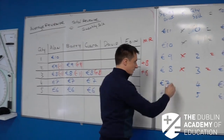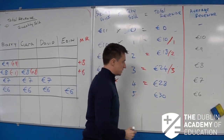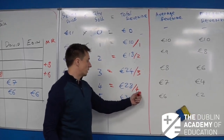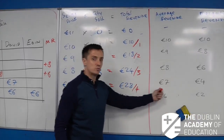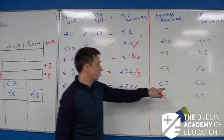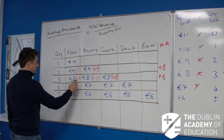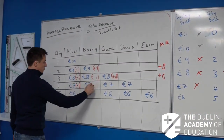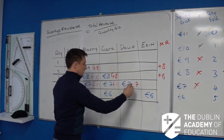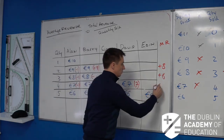If I drop the price to 7 euro, I'll sell 4 markers: 7 by 4 is 28. Average revenue is 28 divided by 4, which is 7 euro. However, my marginal revenue is only going to go up by 4. I gain 7 euro here, but I lose a euro each time — minus 1, minus 1, minus 1 is minus 3 — plus 7 gives me plus 4. That goes across the board.